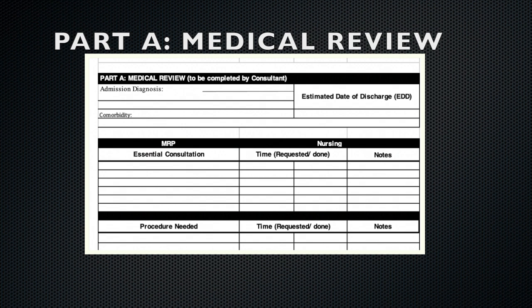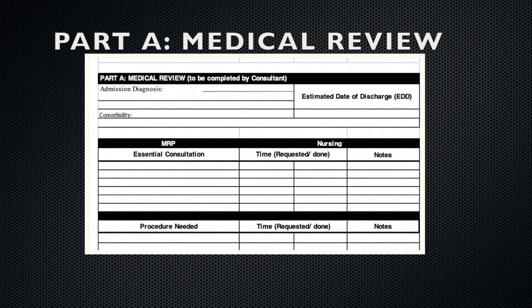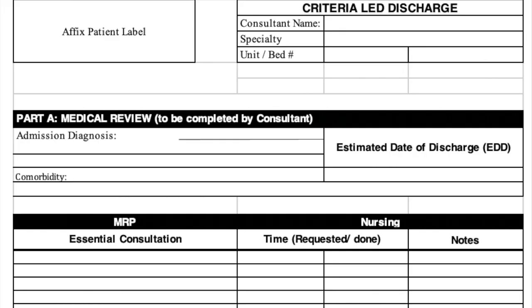The form has three main parts which are Part A, Medical Review; Part B, Criteria of Clinical Discharge; and Part C, Patient MEP.